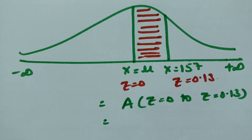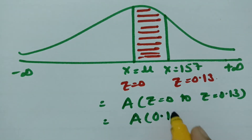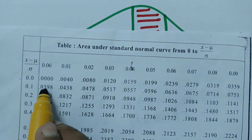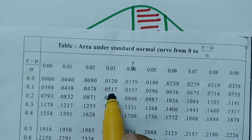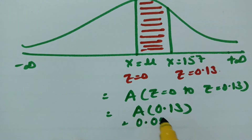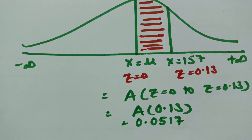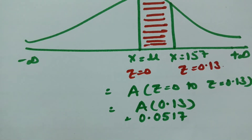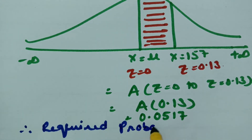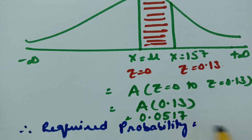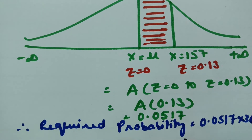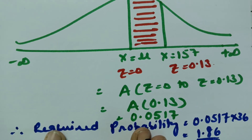The area for z equal to 0.13 — looking at 0.1 under column 3 in the z-table — gives the value 0.0517. So the area is 0.0517. Therefore, the required probability for 36 students is 0.0517 multiplied by 36, which equals 1.86. So the answer is 1.86.